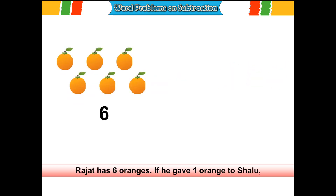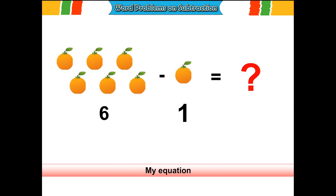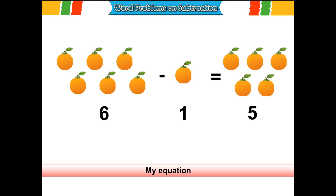Rajak has 6 oranges. If he gave 1 orange to Shalu, how many oranges are left? My equation: 6 oranges minus 1 orange is equal to 5 oranges.